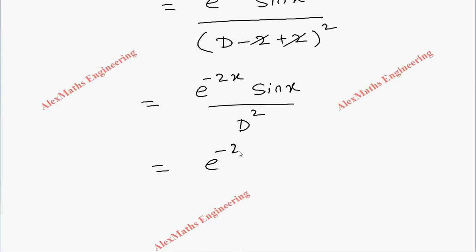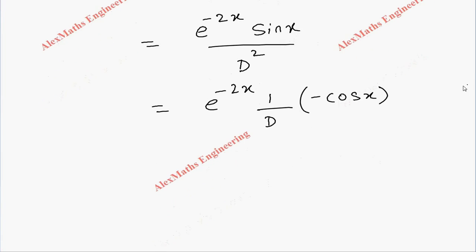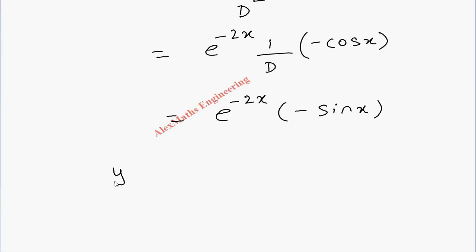When I integrate once, it will become 1/D integration of sin(x), which is -cos(x). Once again I have to integrate -cos(x), which is nothing but -sin(x).